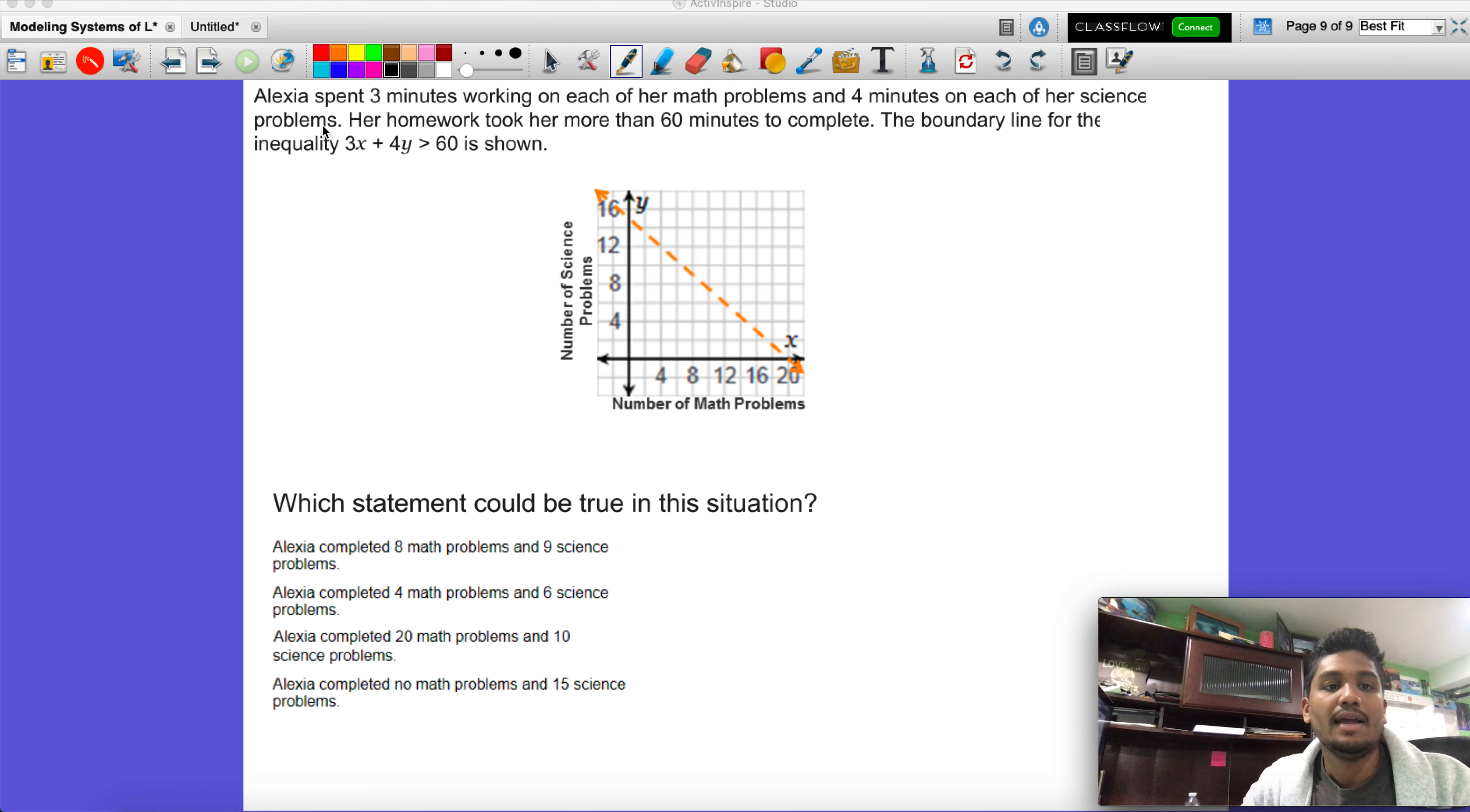We'll do for this playlist. It says Alexa spent three minutes working on each of her math problems and four minutes on each of her science problems. Her homework took her more than 60 minutes to complete. The boundary line for the inequality 3x plus 4y is greater than 60 is shown, so they already drew everything for us.